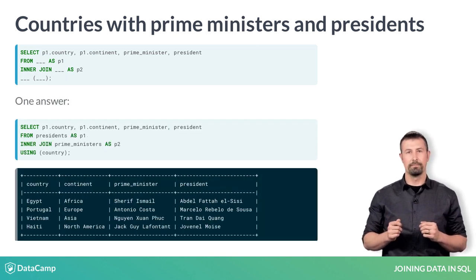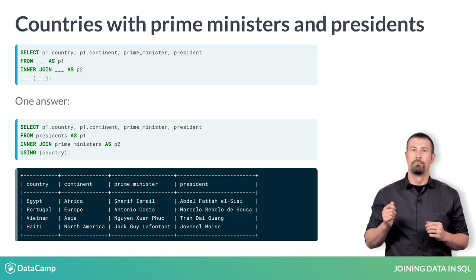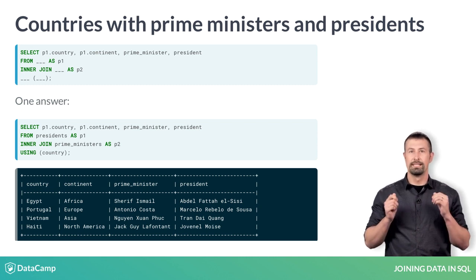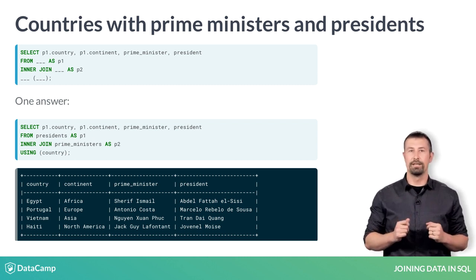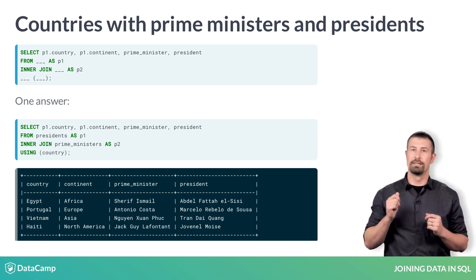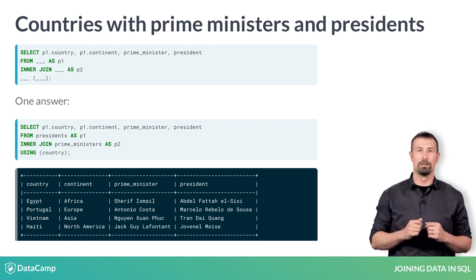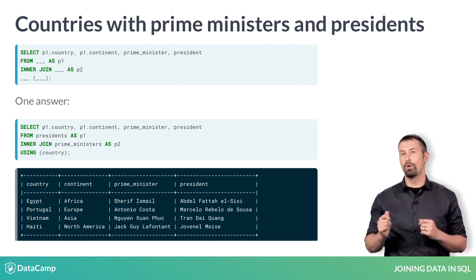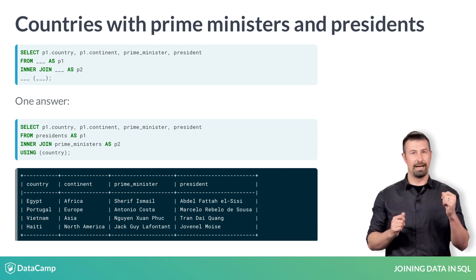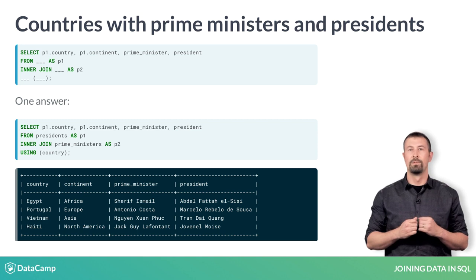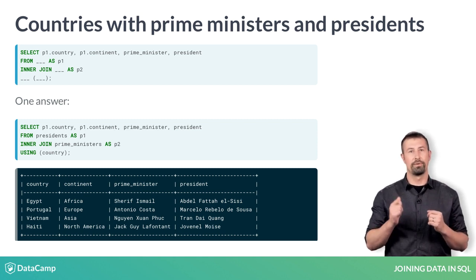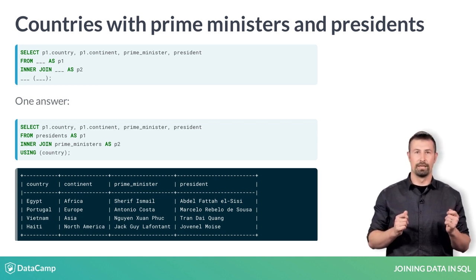I played a bit of a trick on you here. Since an inner join includes entries in both tables, and both tables contain the countries listed, it doesn't matter the order in which we place the tables in the join if we select these columns. You'll be told in the exercises which table to use on the left and on the right to avoid this confusion. Note again the use of the parentheses around country after USING.